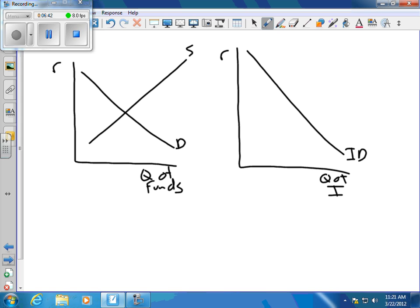Even though the demand for loanable funds in many ways is the investment demand curve, we'll still keep these as separate thoughts. Let's say they come up with a scenario where the government had a balanced budget, but now it increases its spending. It will be implied in the question that it's no longer a balanced budget or they can't pay for it with tax dollars, so they have to borrow. The government enters the loanable funds market and demands some of those funds.